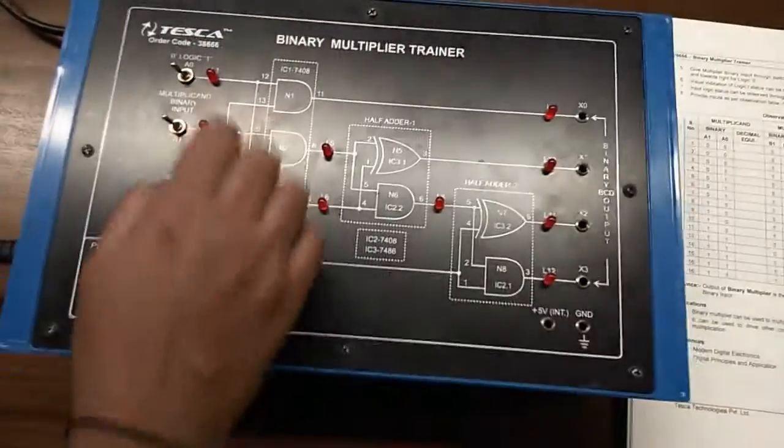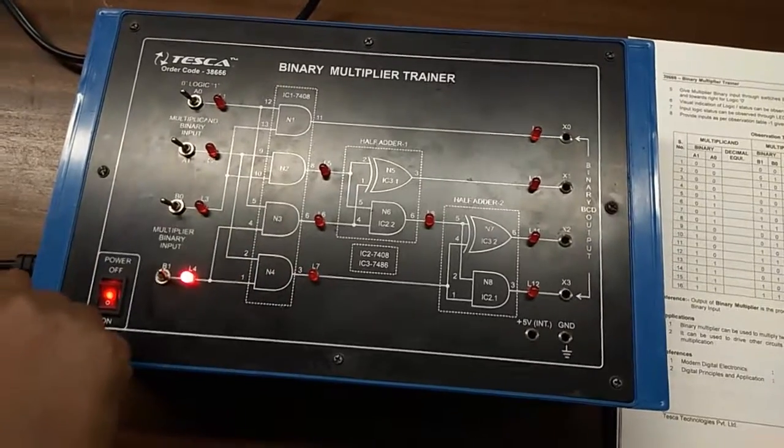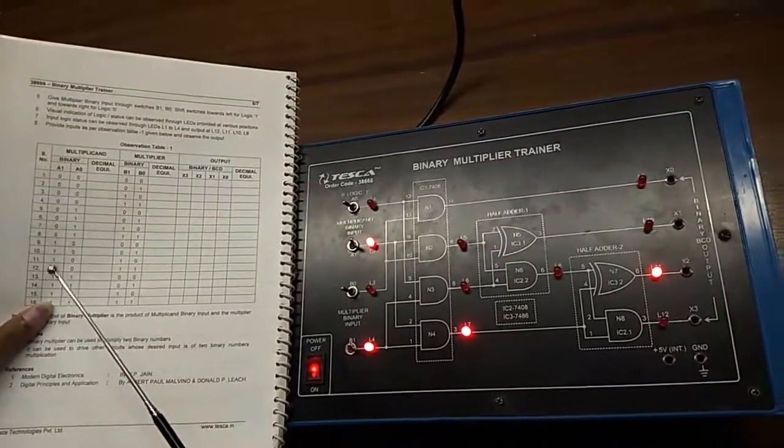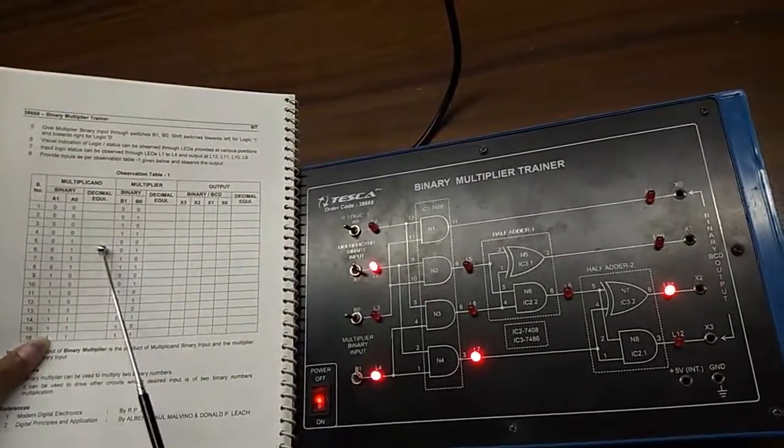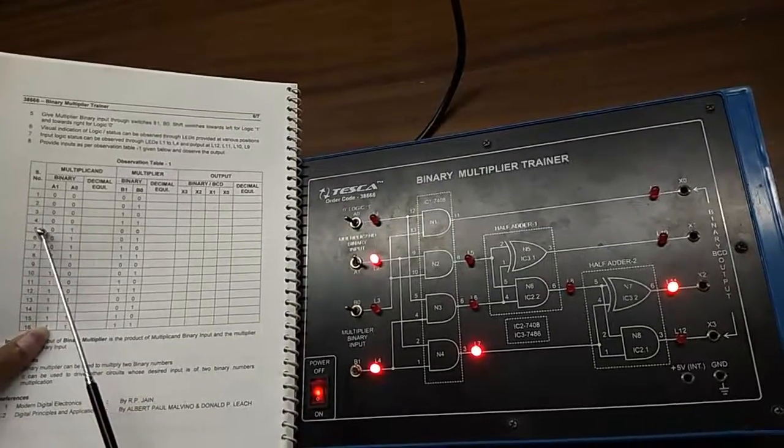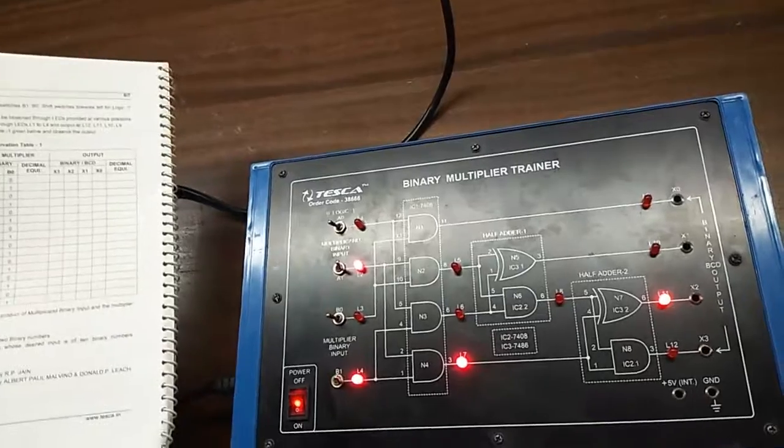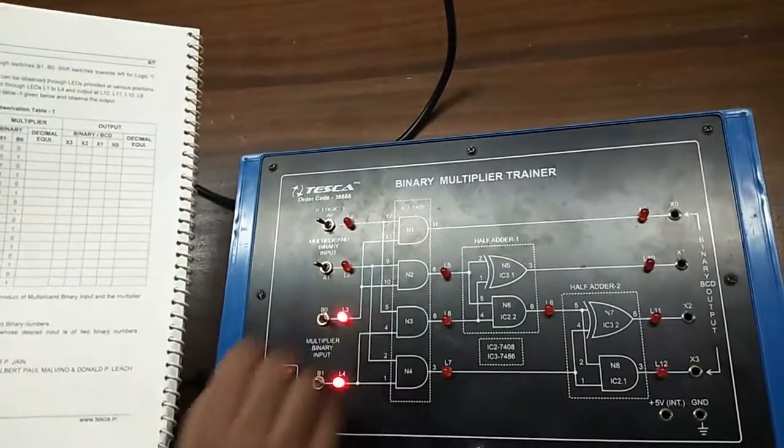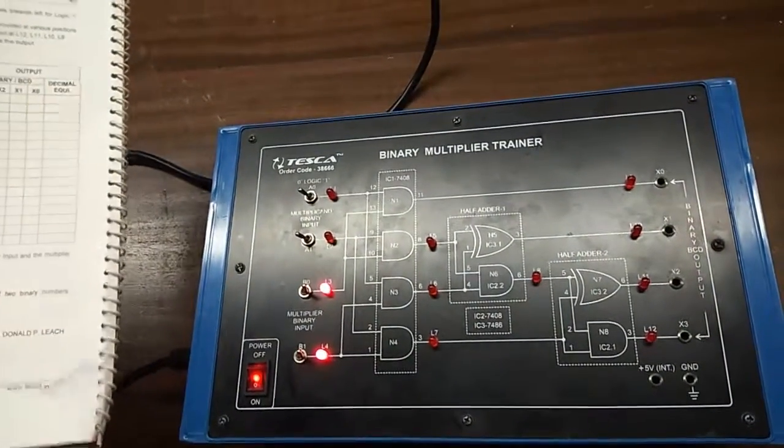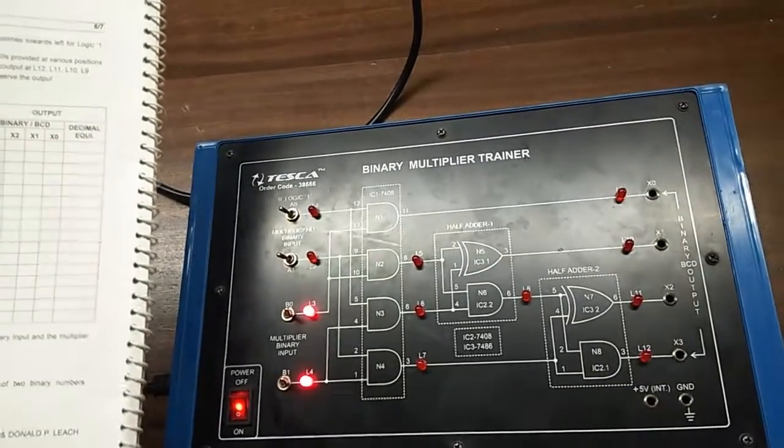Now I am giving 0 0 1 0. Now I will give number 4 it is 0 0 1 1. I am giving 0 0 1 1. There will be no output.